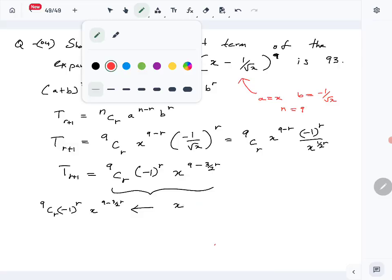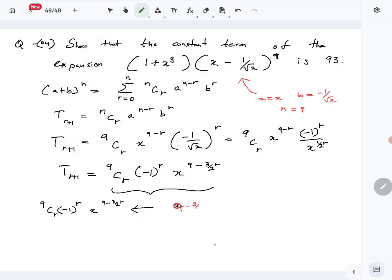So that is when 9 minus 3 over 2 R is equal to 0. R is equal to how much? R is equal to 6. So that is when we multiply this expansion with 1. So substitute R equals 6 here, so first part of the constant is constant part 1, equals 9C6 minus 1 to the 6. So that just turns into 9C6.